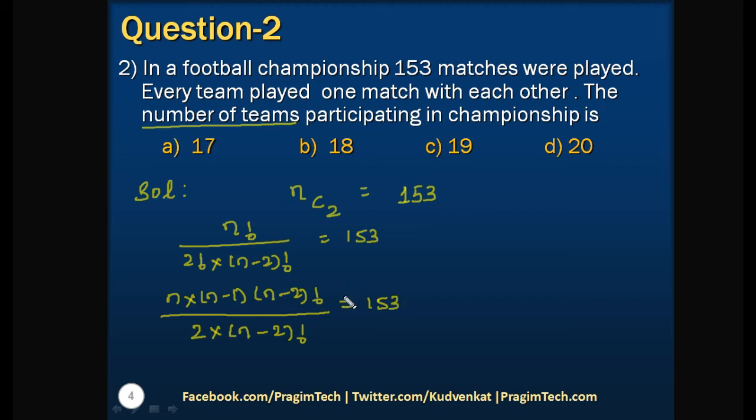If you look at on the left hand side in the numerator and denominator we have N minus 2 factorial. So we can cancel out those two. Now the remaining terms are N into N minus 1, which we can write it as N squared minus N, is equals to 2 into 153. So on further simplification it will be N squared minus N minus 306 equals 0.